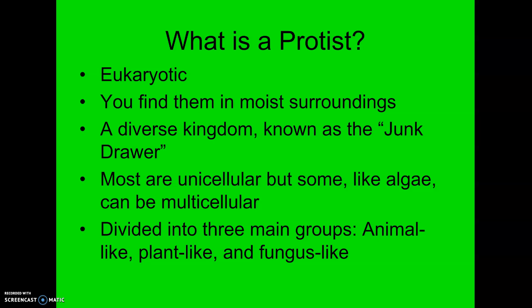Most protists are single-celled, unicellular. Some can be multicellular or what's called colonial, where they're like a group of cells living together. They're subdivided into three main general groups: animal-like — the ones that move and can't make their own food; plant-like — the ones that typically don't move and do make their own food; and then fungus-like — the ones that sort of behave like funguses.